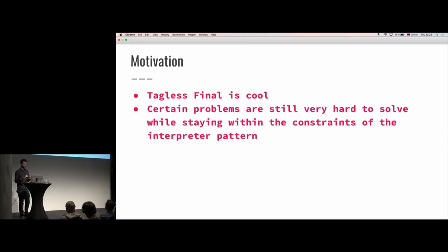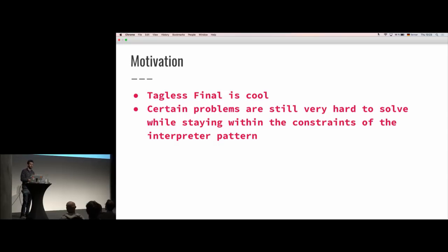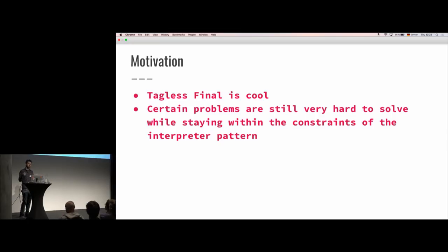Tagless final uses what I call the interpreter pattern, which basically means that we build up a program — we describe a program — and then we interpret it later, similar to what we just saw with Free Monad and what Marcus showed us. There are problems that are hard to solve because when we work in these abstract ways, we always lose the ability to make use of special functions that our instances have. For example, if you abstract over a bunch of databases, you won't be able to use specific features of one such database.